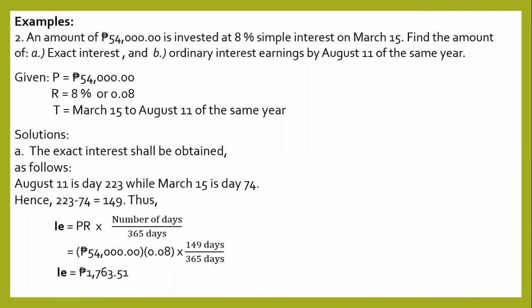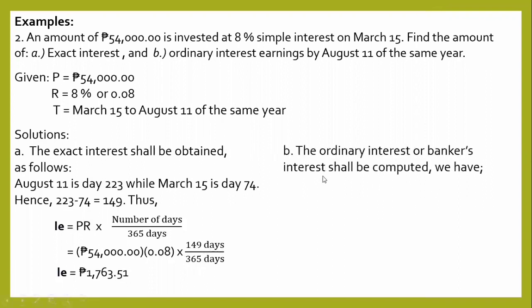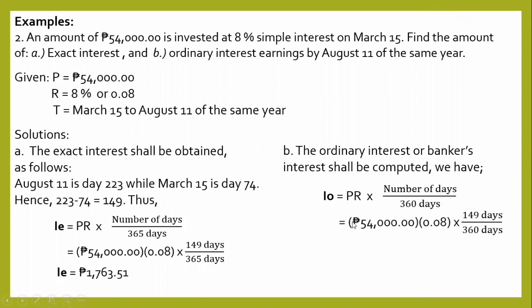For letter B, the ordinary interest — also called banker's interest — is computed using: IO is equal to P times R times the number of days, divided by 360. Substituting: 54,000 times 0.08 times 149, divided by 360. The ordinary interest is equal to 1,788 pesos.